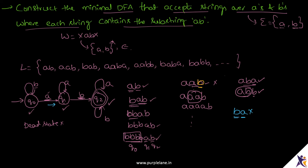We reached the end of the string BA but we still didn't reach the final state, so this string is not accepted by the DFA. Let's consider another string AAA — also not in our language. On seeing A from Q0 we go to Q1, on seeing A from Q1 we stay in Q1, on seeing A from Q1 we stay in Q1 again. We reach the end of the string still in Q1, which is a non-final state, so this string is not accepted either. You can verify any string not in our language — this DFA will not accept it.